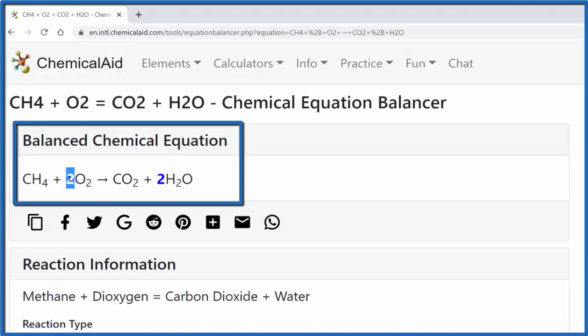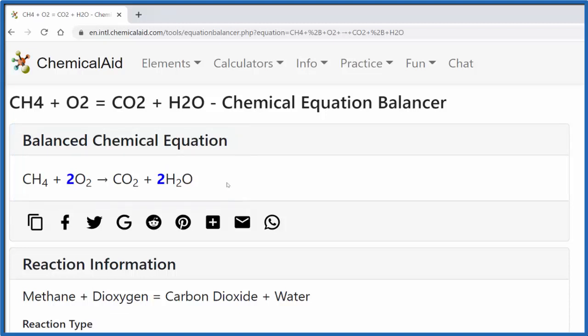Now what I can do as someone trying to learn how to balance equations is go back and look at what I've done, compare them, and work backwards from this equation to see how I might have done better. Sometimes you're given chemical equations that you can't balance at all.